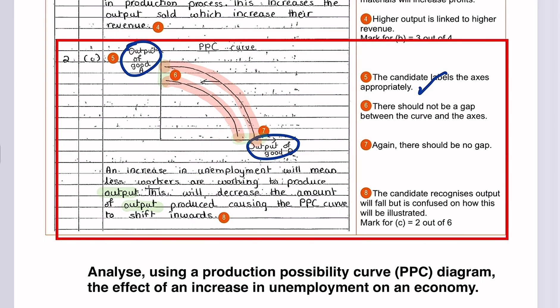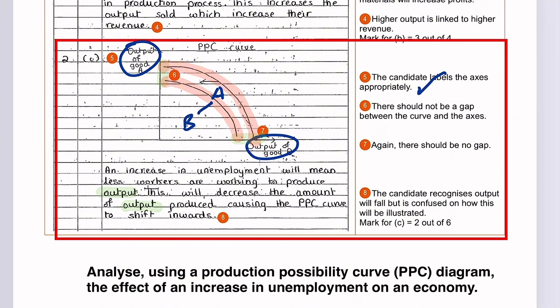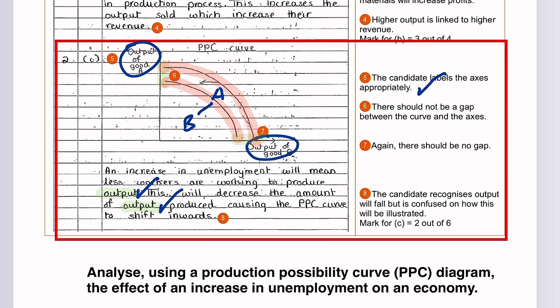Now please note that shifting the diagram to the left is incorrect, as unemployment is just short term, which reduces the economy's efficiency. Therefore, the correct curve or the correct method for this is shifting it from A into B. The candidate scored an additional mark here by recognizing a fallen output. As you can see, an increase in unemployment will mean there will be less workers that are working to produce output. This will decrease the amount of output produced causing the PPC curve to shift inwards. This is an effect and is clearly missing a reason why. Hence why the candidate scored two out of six, one for the label and one for the effect.